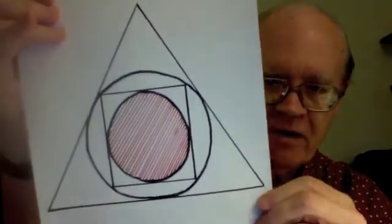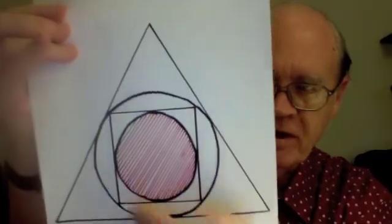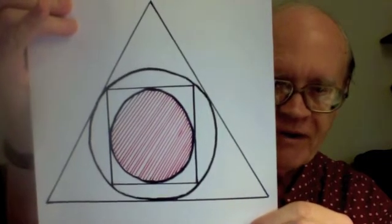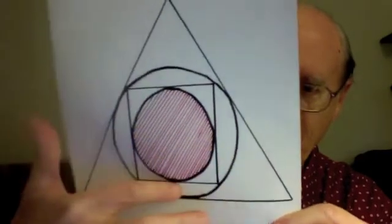Within that circle, a square that just touches the circle at its four corners. And within that square, an inner circle that just touches the square at these four points.